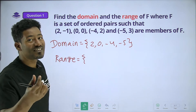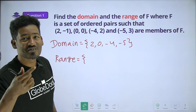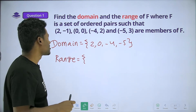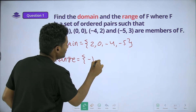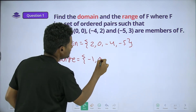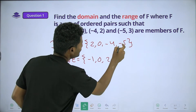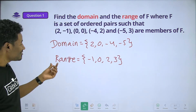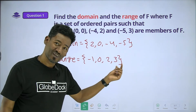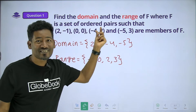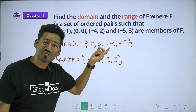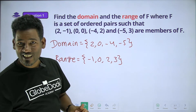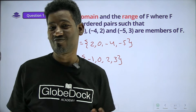The range is the y-values of the ordered pairs. What's the name here? Range here. What's the name here? Domain here. What's the name here? Range here.